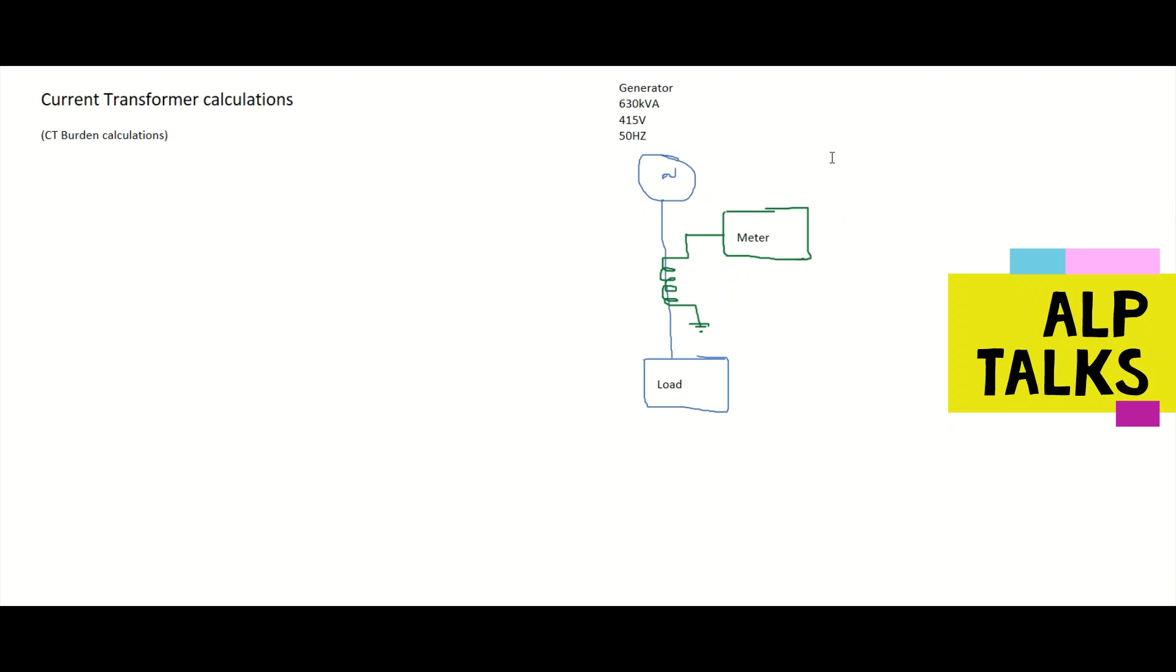So here we are going to discuss current transformer calculations. You have a generator here, 630 kV generator, 415 volts, 50 hertz. This is the generator, and the load is here. We want to measure how much current is flowing to the load by using one metering CT.